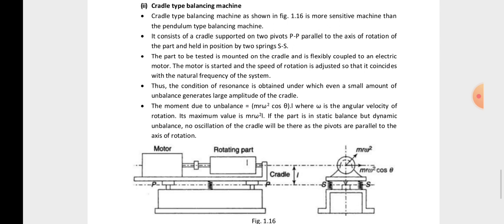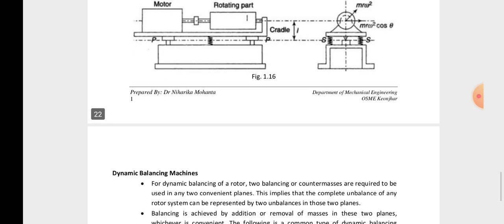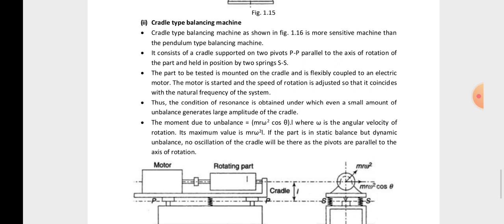The moment due to unbalance has a maximum value of m·r·ω²·l, where ω is the angular velocity of rotation. If the part is in static balance but dynamic unbalance, no oscillations of the cradle will occur about the pivoted parallel axis of rotation. Resonance generates a large amplitude of the cradle, which defines the kind and magnitude of unbalance.